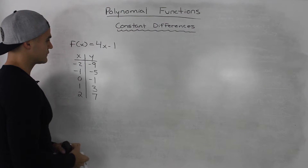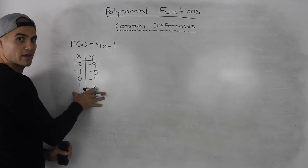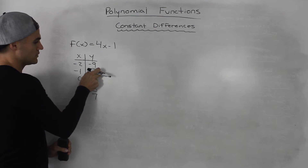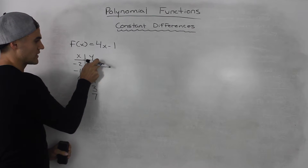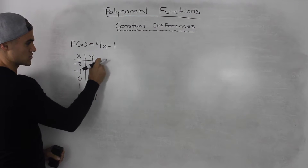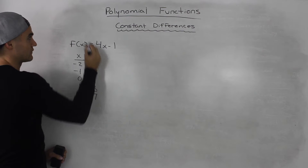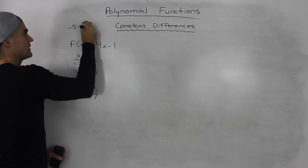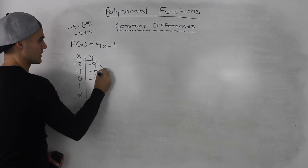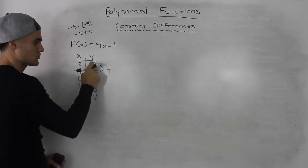To find the differences, you go to your table of values and take every bottom y value and subtract the y value that's above it. We can't start with negative 9 because there's no y value above it, so we start with negative 5. Negative 5 minus negative 9 is the same as negative 5 plus 9, which gives us 4. So the difference between these two y values is 4.